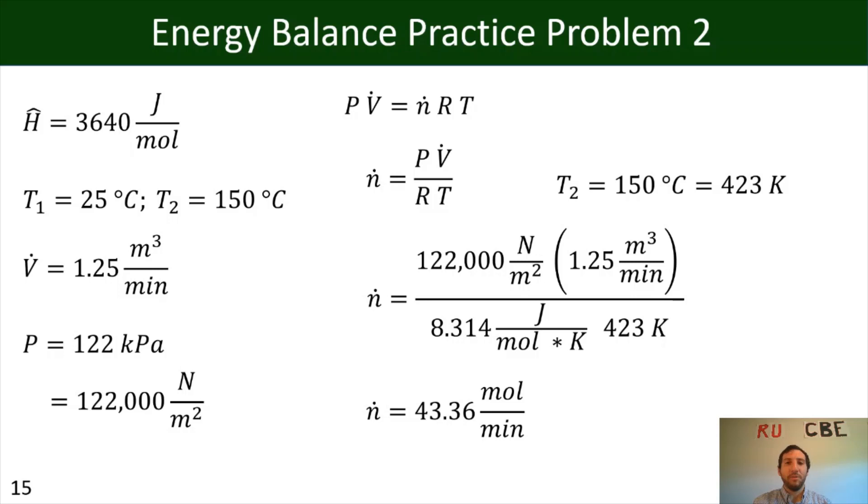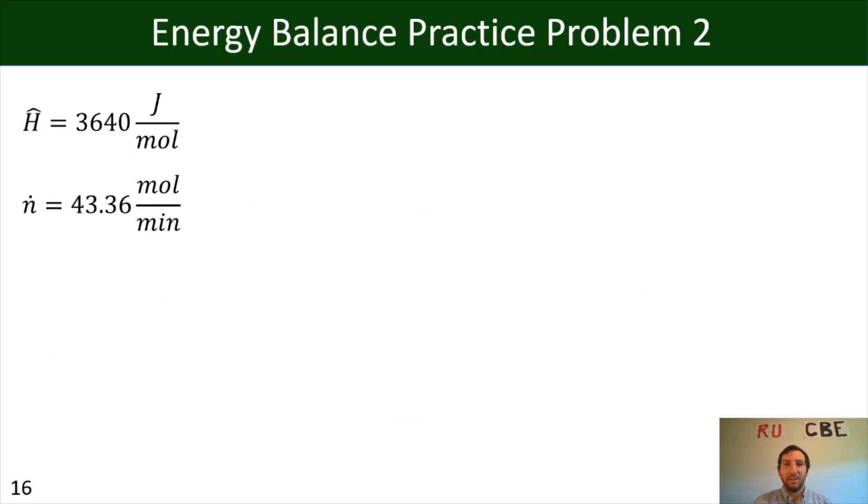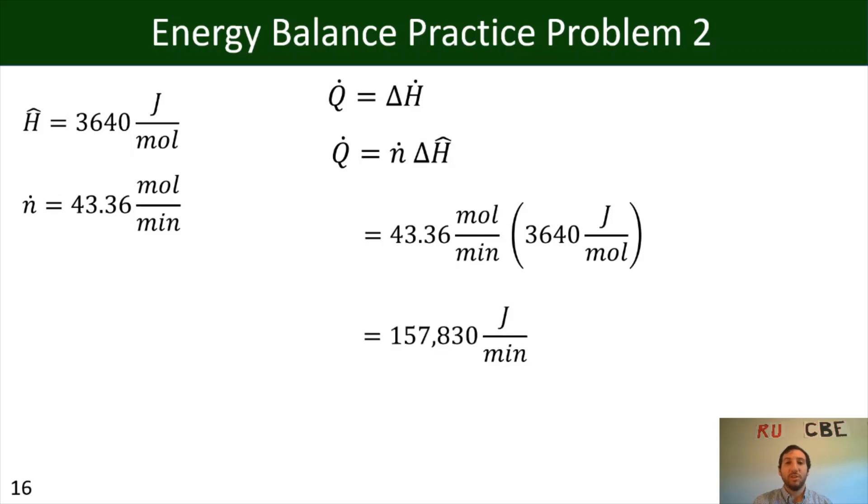All right. And so now moving on, on the left side, I'm now updating what we have as useful terms. And as a reminder, we have established that Q dot is going to equal delta H dot. And because we have a specific molar enthalpy, or we have a specific enthalpy, yeah, it's going to equal N dot times delta H hat, where I can multiply our molar flow rate by our specific enthalpy to get our Q dot. And so I'm going to do that, I'll substitute our values in, we'll get 157,830 joules per minute.